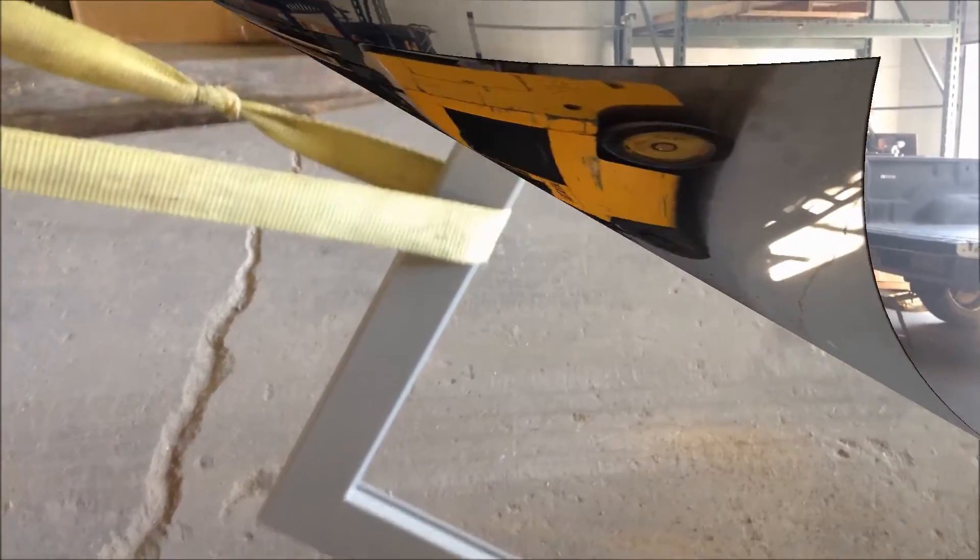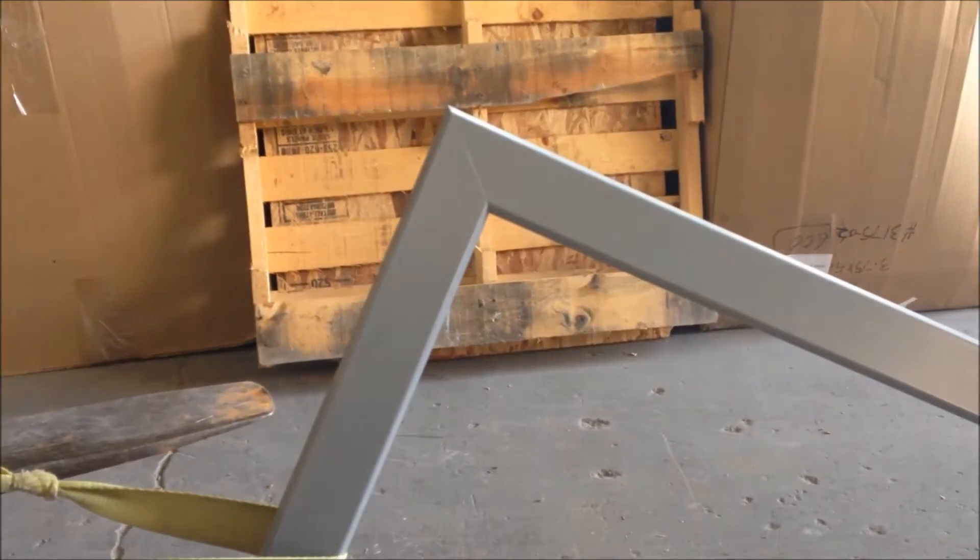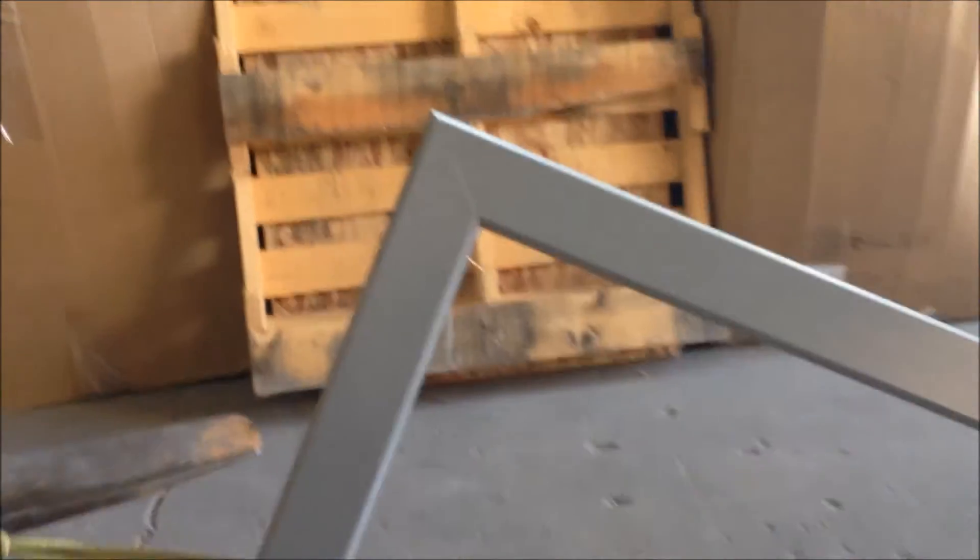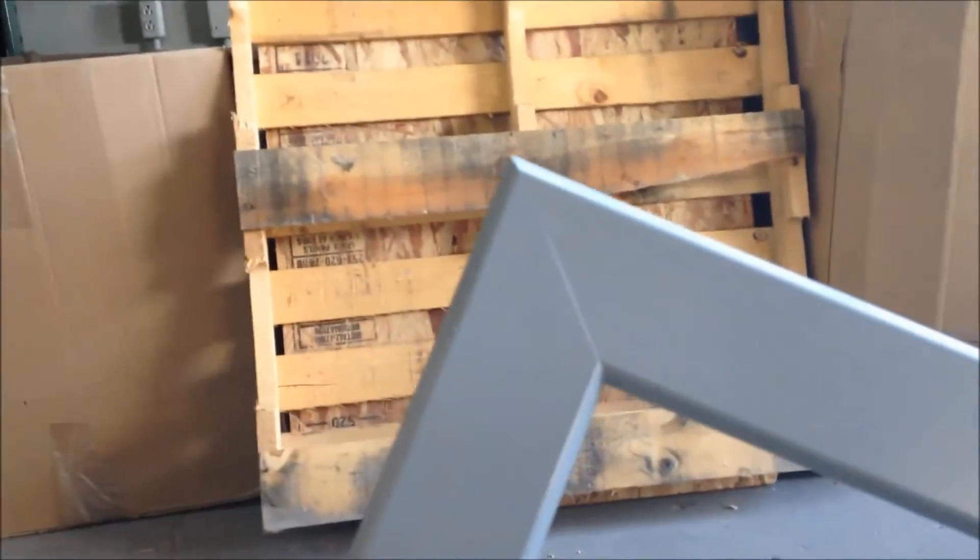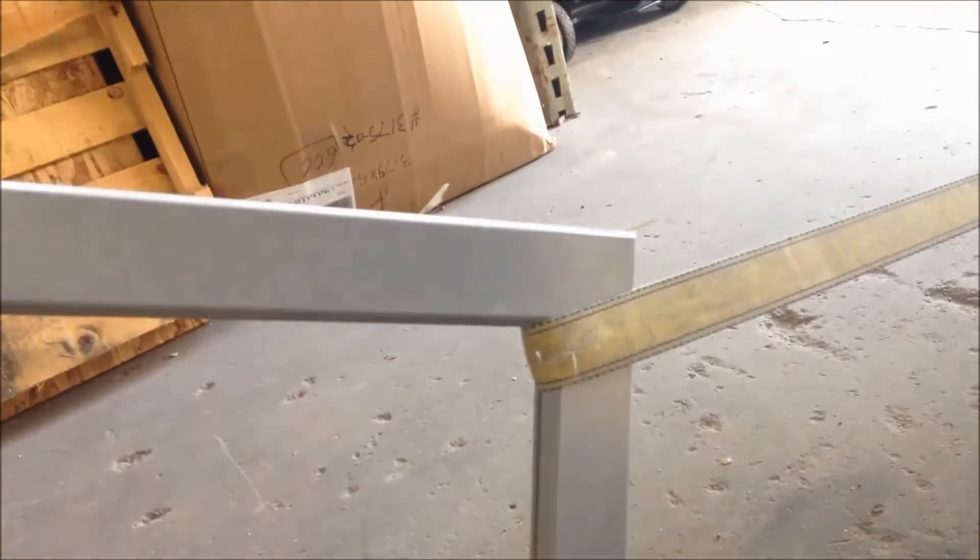So we just completed the test of our SuperStrong Corner system where we pulled the forklift and as you can tell, the miters did not come apart one bit on any of the sash corners, nor did the fiberglass crack on the outside of the sash.